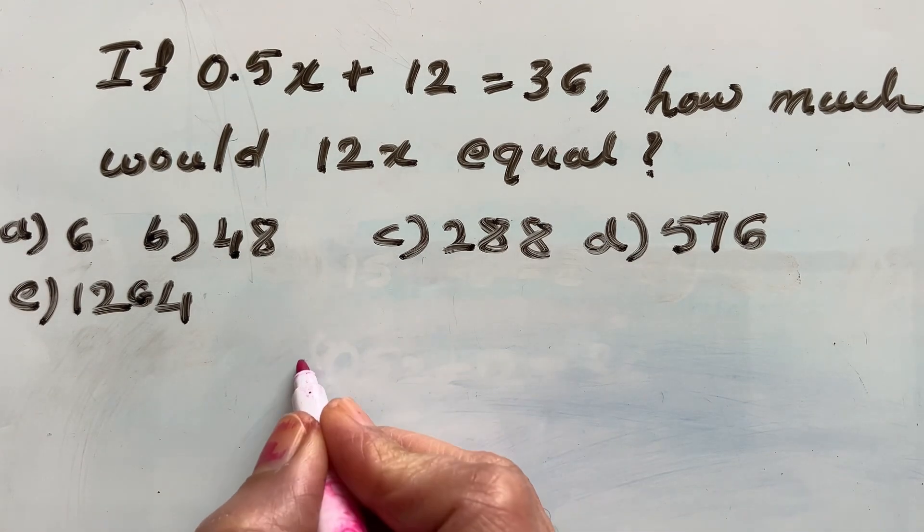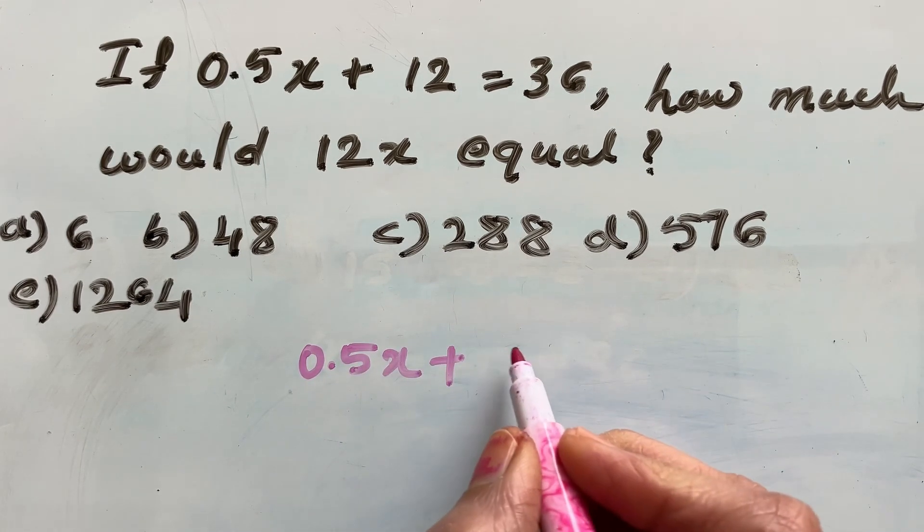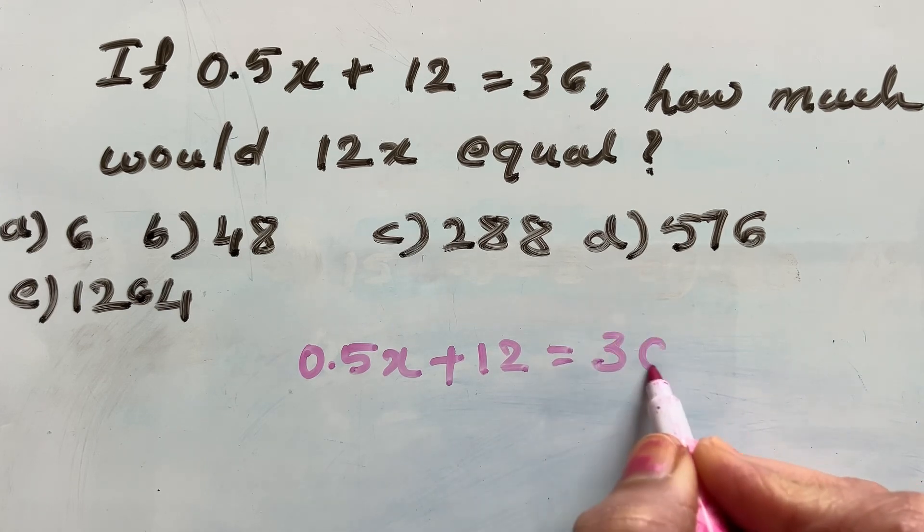What is given? 0.5x plus 12 is equal to 36.